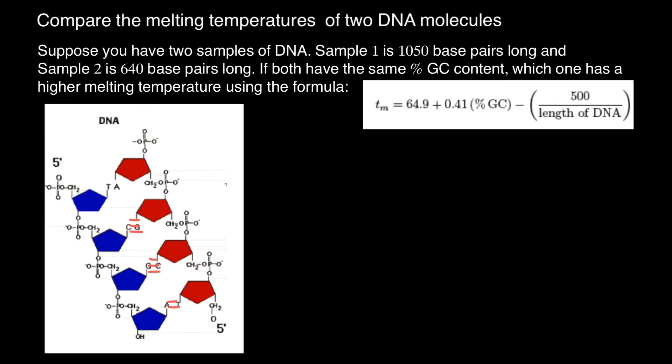So as you understand, the more GC content of the double-stranded DNA, the more hydrogen bonds we have between two strands of the DNA molecule, and the more energy we have to apply in a form of temperature in order to separate these two strands.